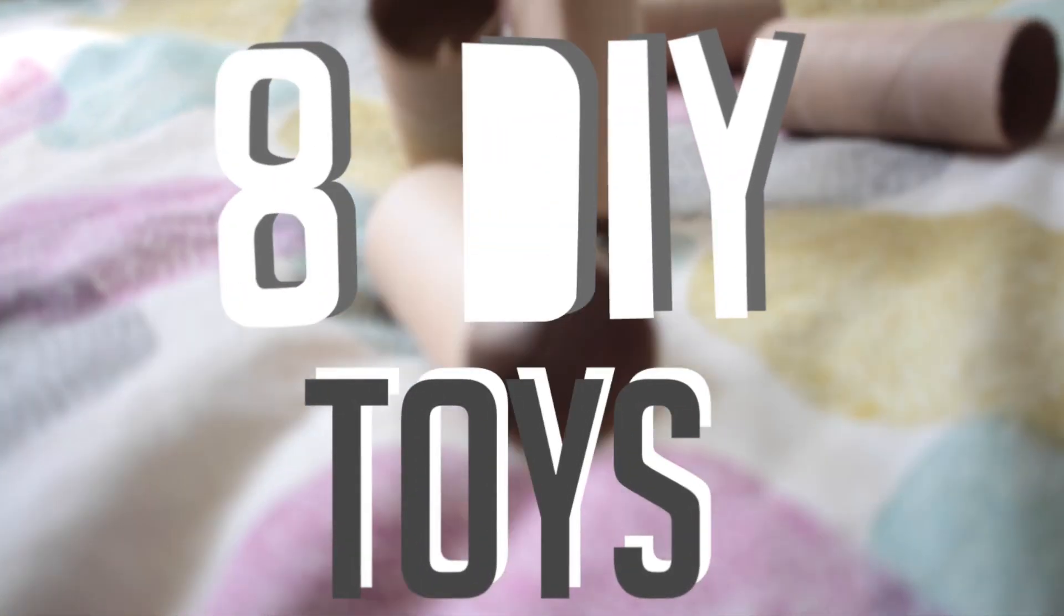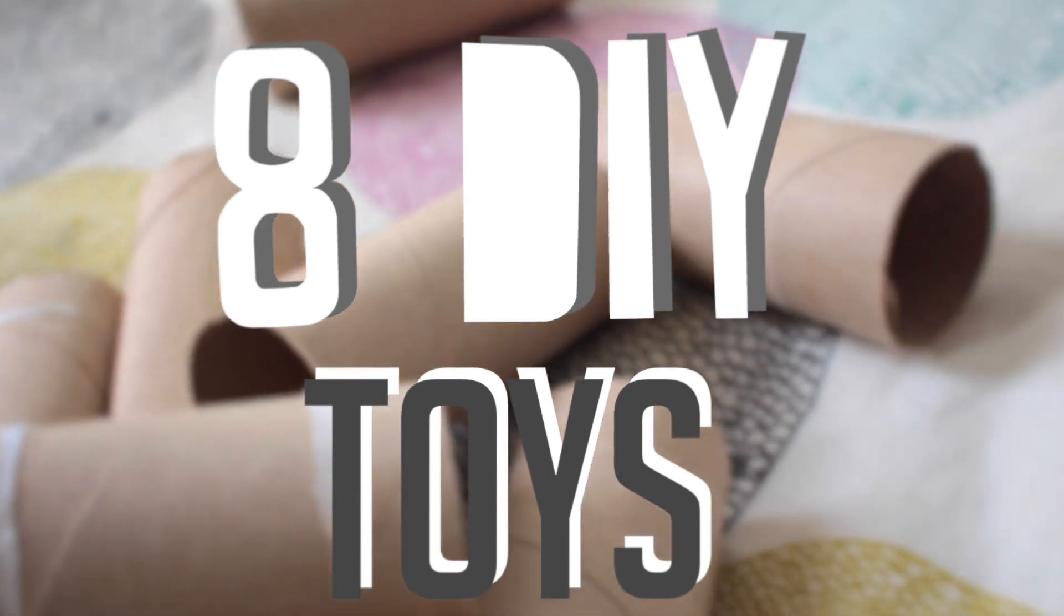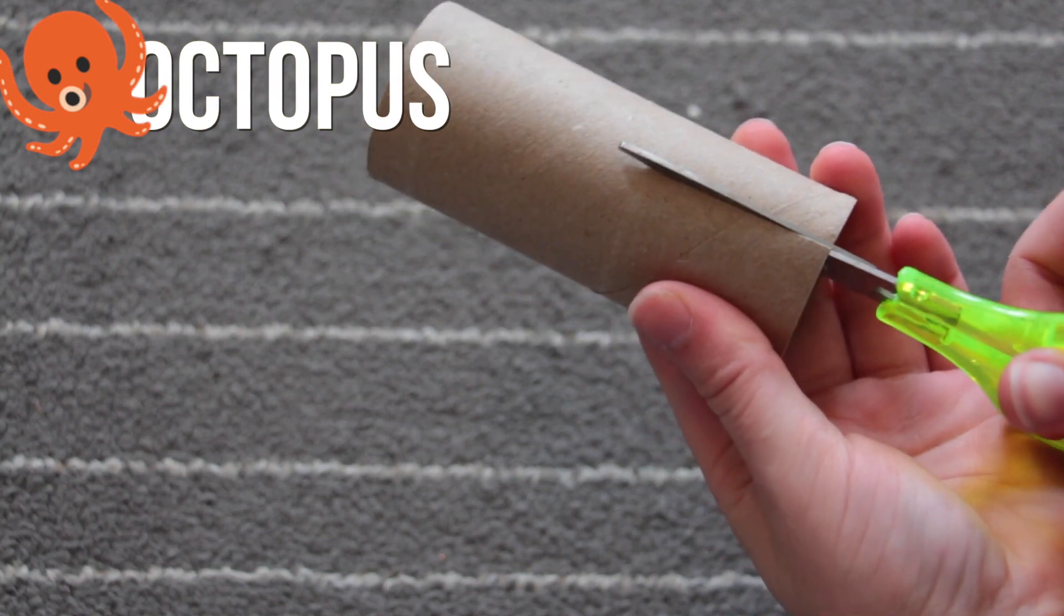Hey guys, this is Abby, and in this video I'm going to be showing you how to make eight different toys with toilet paper tube rolls. So the first one we are going to be making is an octopus.